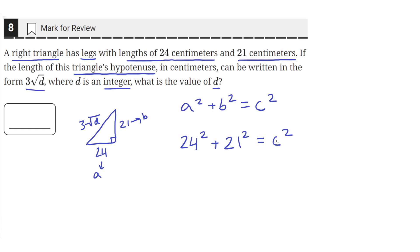So then to solve for the value of c, we can take the square root of both sides. So when we take the square root of c squared, we're left with just c, and then the square root of 24 squared plus 21 squared.